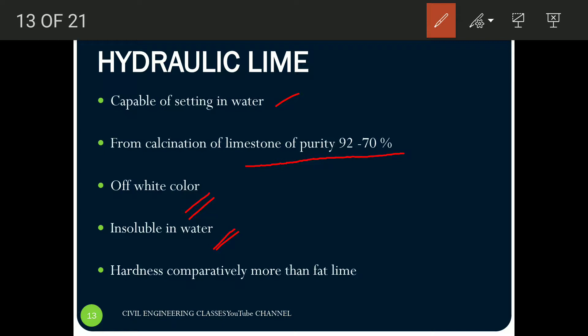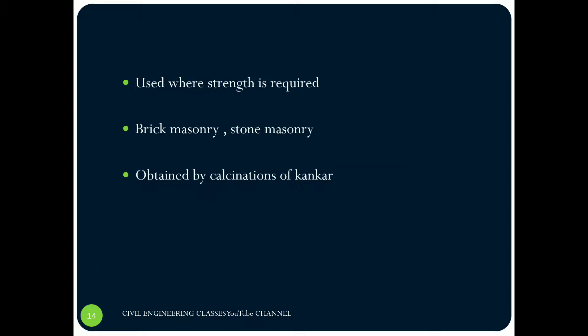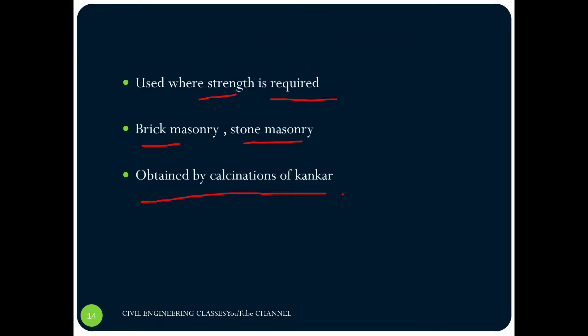Since the clay content is comparatively more, hydraulic lime has greater hardness than fat lime. Because of this, it can be used where strength is the requirement — for example, in brick masonry and stone masonry. It is obtained by the calcination of kankar. Note that fat lime increases its volume by 2 to 2.5 times on slaking, so using fat lime in masonry would cause vigorous expansion that would damage the masonry. Therefore, fat lime is not used for masonry purposes — it is only used for whitewashing and plastering.